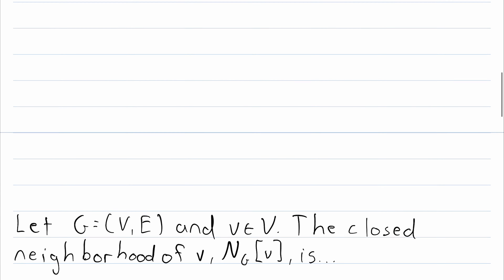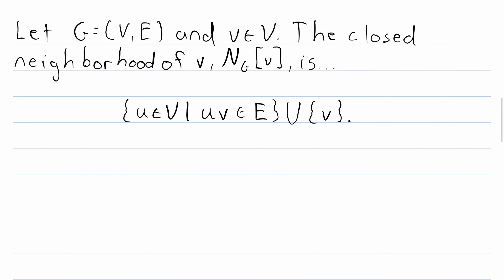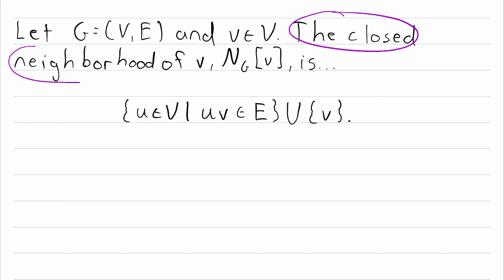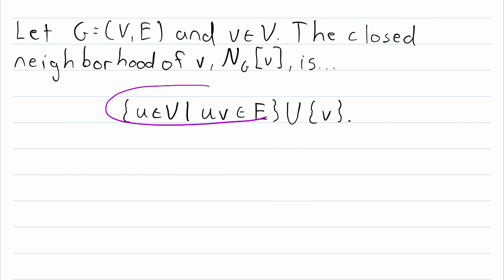However, sometimes we may want to discuss a closed neighborhood. Same as before, we've got a graph G, vertex set V, edge set E, and v is a vertex of the graph. Then the closed neighborhood of v, which is written with square brackets instead of parentheses, is the set of all neighbors plus the vertex itself. So the closed neighborhood of v is the set containing all of v's neighbors and v itself.